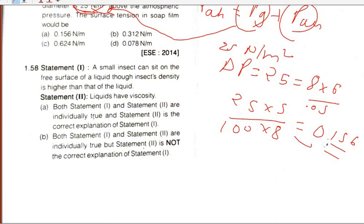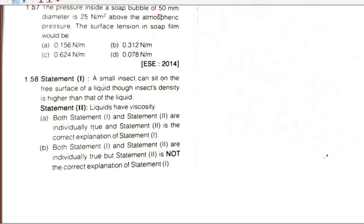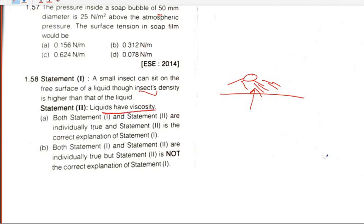Statement 1: A small insect can sit on the free surface of a liquid even though its density is higher, because of surface tension. This statement is correct. The reason given — that liquid has viscosity — is not the correct explanation. So D will be the answer.